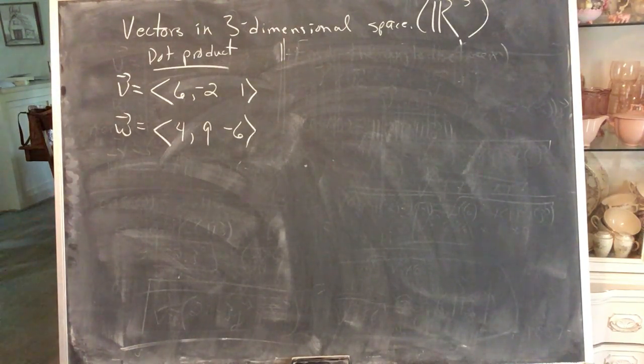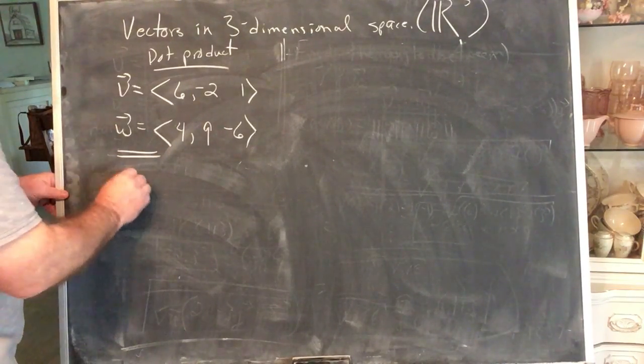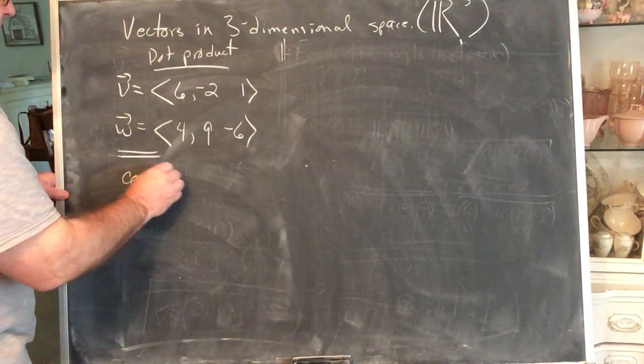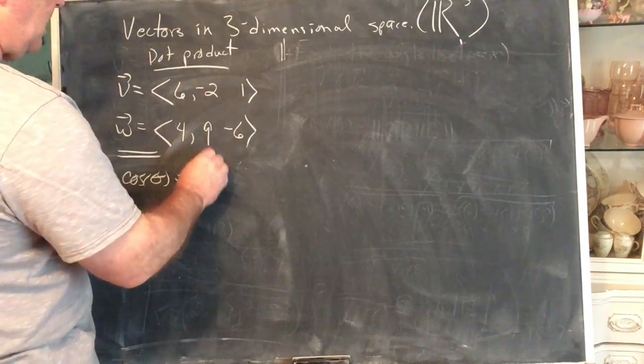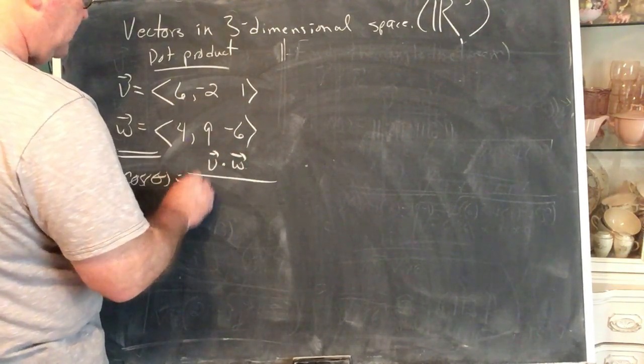Alright, so let's see if we can find the angle between these two vectors. Find the angle between the vectors. We know that cosine theta is the dot product over the product of the magnitudes.